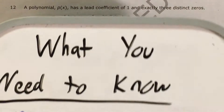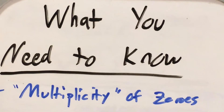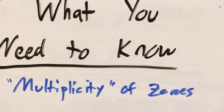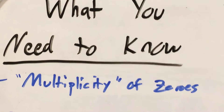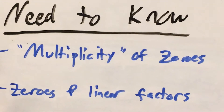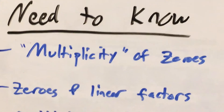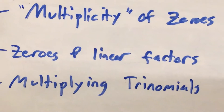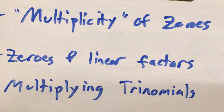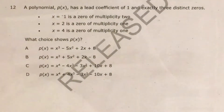Now this is going to test us on three skills. First, recognizing what multiplicity means when it talks about a zero. Second, the relationship between zeros and linear factors. And third, in the way that I'm solving this problem — which I think is easiest — we will have to multiply two trinomials.